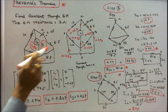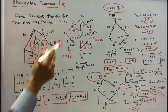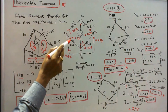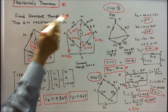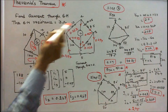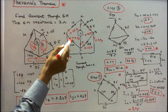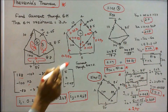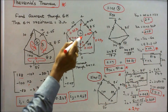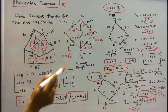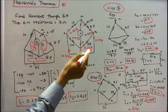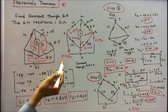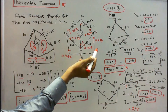Now I verify Kirchhoff's current law. The current towards the junction is 0.294. Current towards the 100 ohm resistance is 0.027, and current towards the 10 ohm resistance is 0.267. Checking: 0.267 plus 0.027 equals 0.294. Similarly, current towards the 8.5 ohm is 0.267 and towards 88 ohm is 0.027, so current leaving the junction is 0.294 — equal to current entering. KCL is verified.